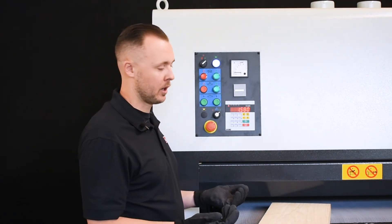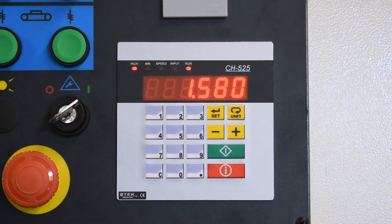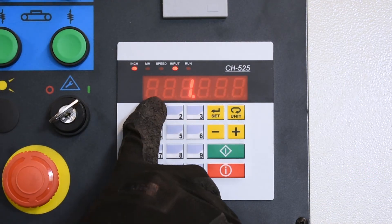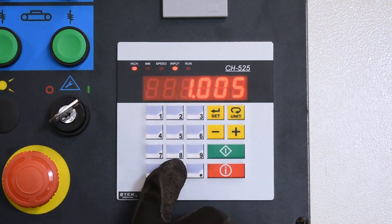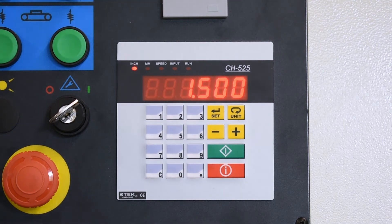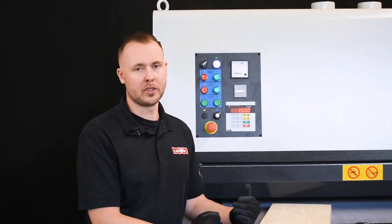So if we find out that our material is actually on the output side is an inch and a half, we can press set. Put in 1.500 inches. And what we want to do, this is the key part, is press set and hold it until it stops flashing.